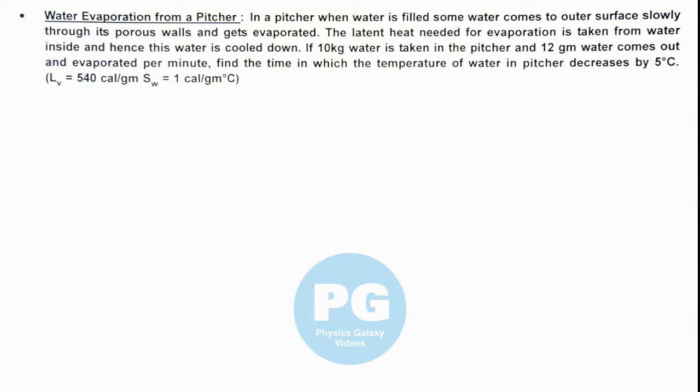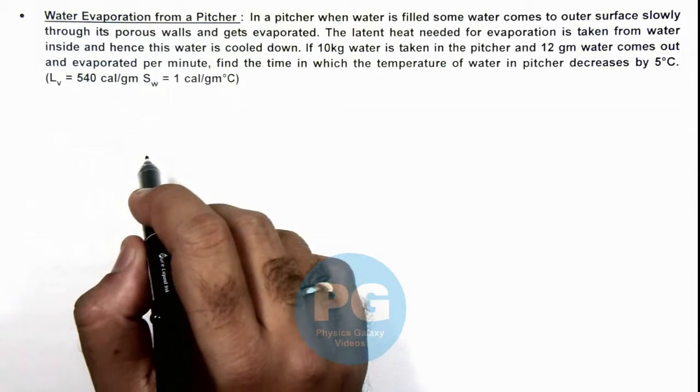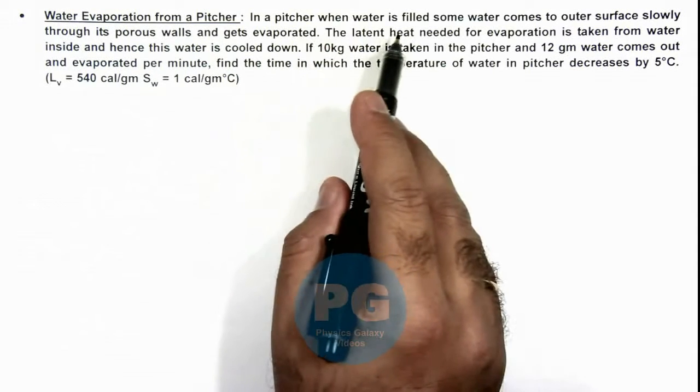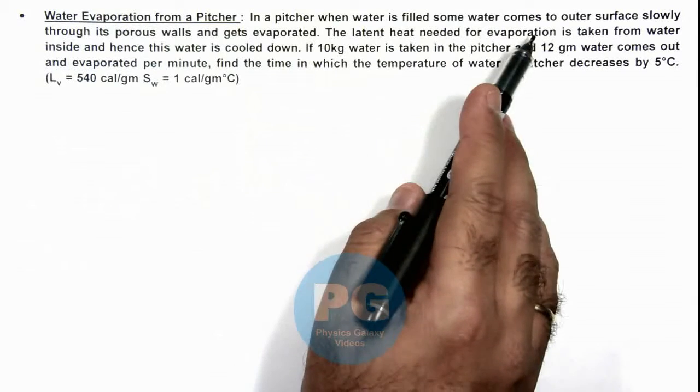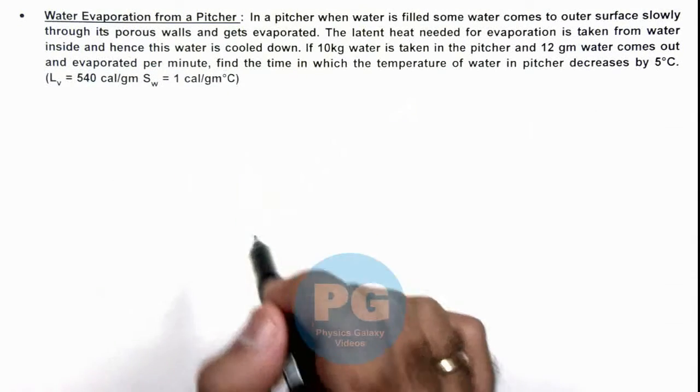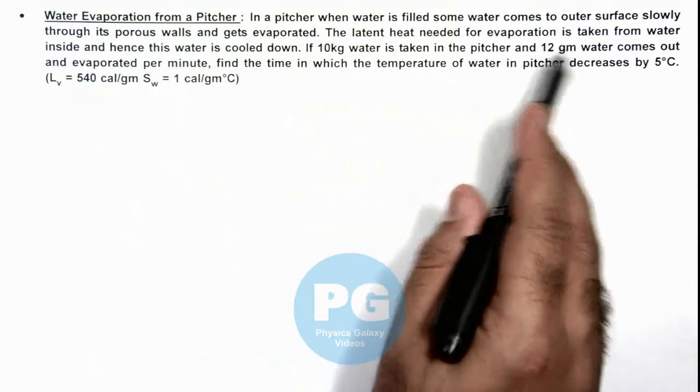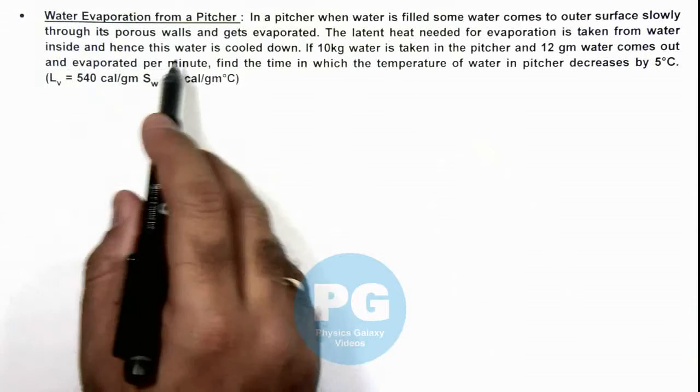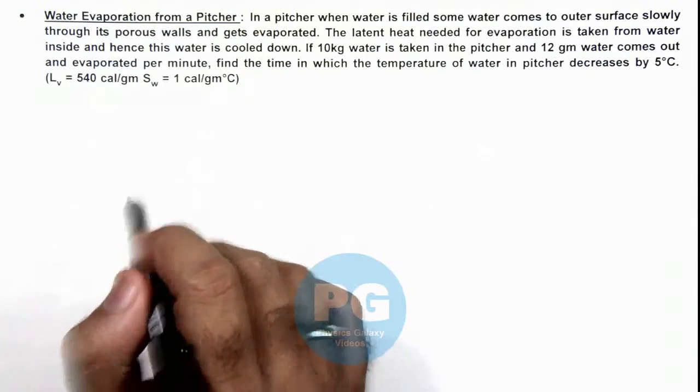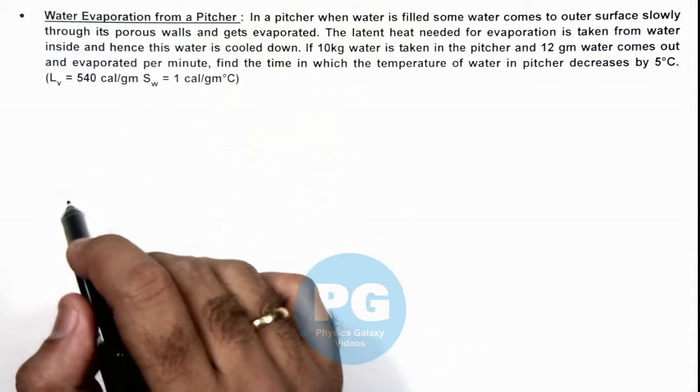In this illustration we'll analyze the water evaporation from a pitcher. We are given that in a pitcher when water is filled, some water comes to outer surface slowly through its porous walls and gets evaporated. The latent heat needed for evaporation is taken from water inside and hence this water is cooled down. That is the concept by which we can say the water in a pitcher cools down.